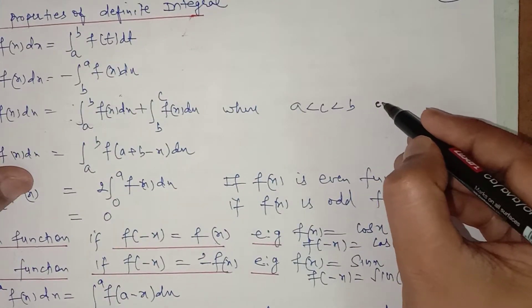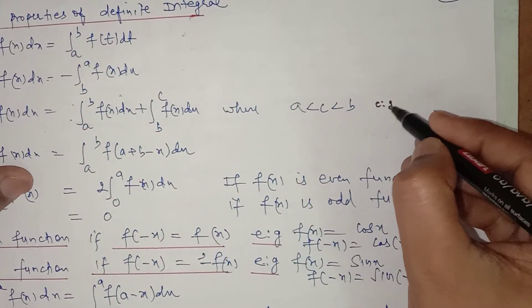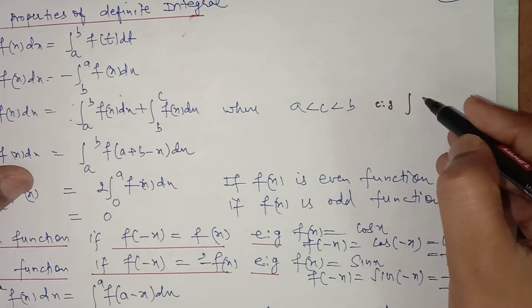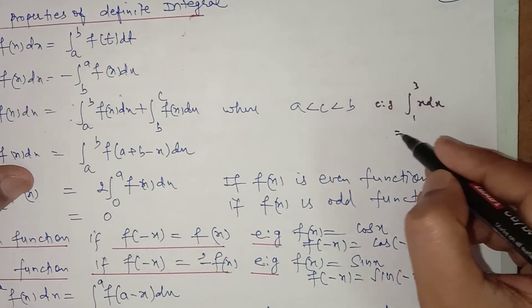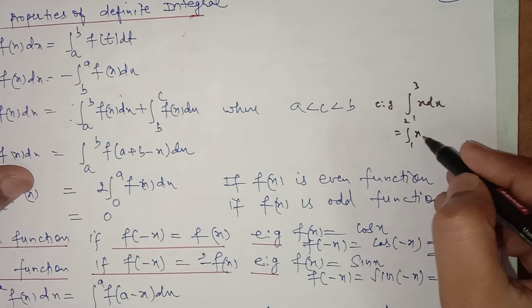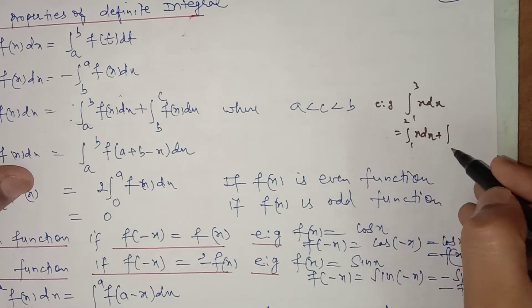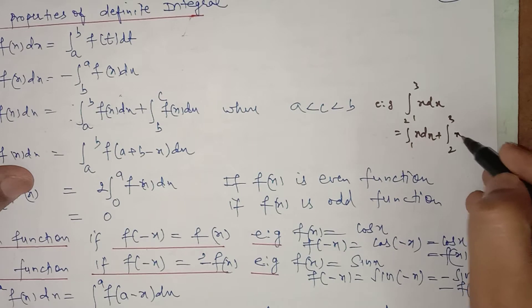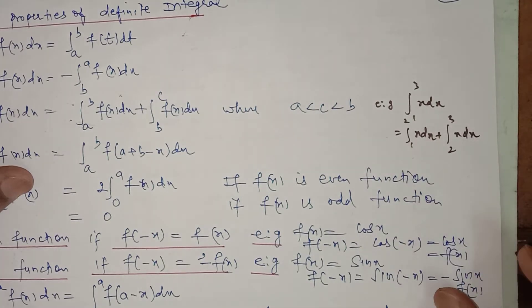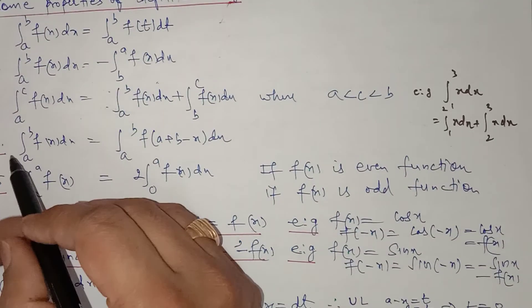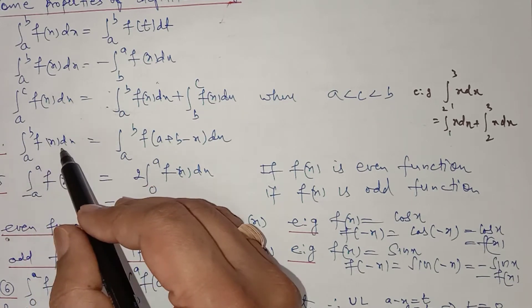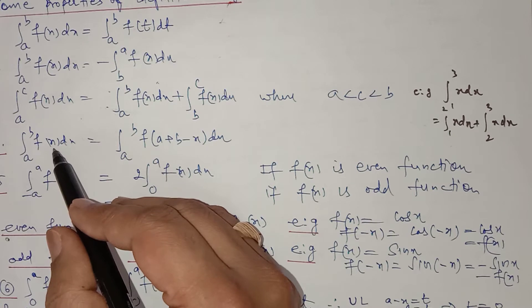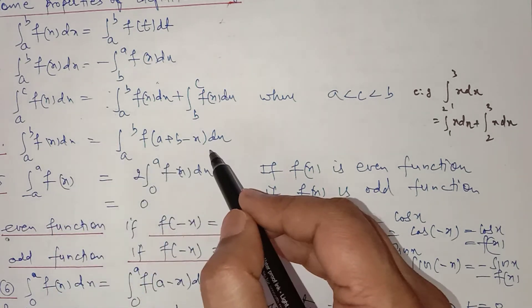For example, the integral of x with respect to x from 1 to 3 can be written as the integral from 1 to 2 of x plus the integral from 2 to 3 of x. The fourth property is: in the definite integral from a to b of f(x) with respect to x, we can replace x with (a + b − x).